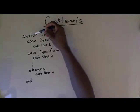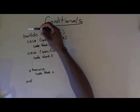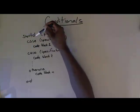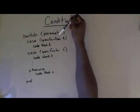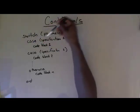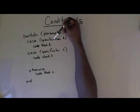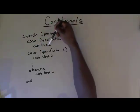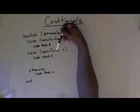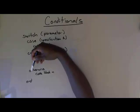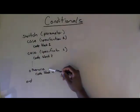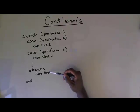Once again, you use the word 'switch' followed by a parameter. In case that parameter meets specification one, do code block one. In case the parameter meets specification two, do code block two. You can have as many cases as you want. Otherwise, at the end, you do the otherwise code block. Note that 'otherwise' is optional — it depends on what logic you're trying to implement.